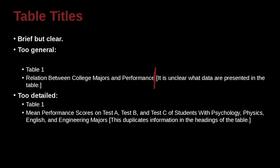Here's one that's a little bit too detailed: Mean performance scores on test A, test B, test C of students with psychology, physics, English, engineering majors. That's a lot of majors. And just read it over to here. That's a note after that. So one is too short and one is too long. The too short one is too general. It's just saying I studied college majors. But this one here, it's got all the majors listed. That's too much.